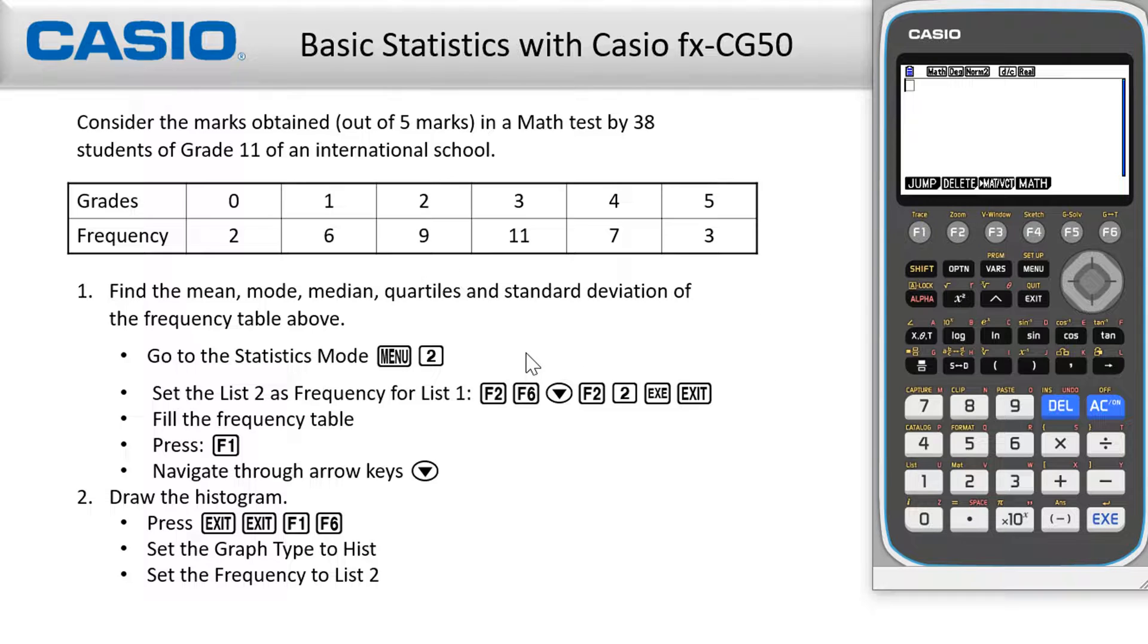Now, to find the mean, mode, median, quartiles, and standard deviation of the frequency table, we do the following. First, select the statistics mode by pressing menu, two.